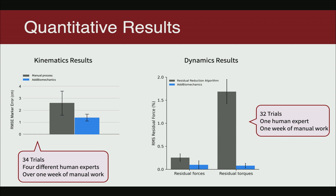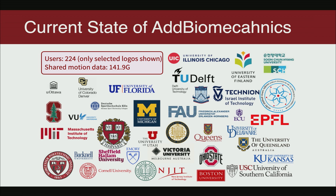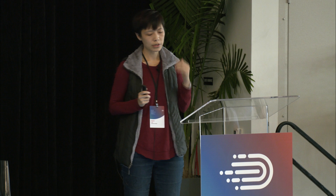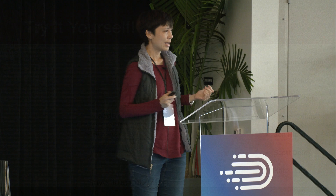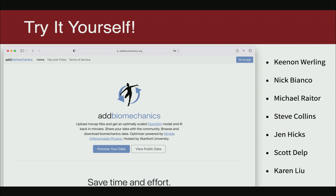We asked friends and colleagues in biomechanics to try our beta version, and in the last eight months we've seen rapid growth in user base and data being collected — with no marketing or advertisements. We expect even more explosive growth once we formally launch AddBiomechanics to the public. If you're intrigued, you can go to the website and try it — it's really easy to use. We believe that if we have a place where data can be shared, aggregated, and standardized, we can empower many more researchers to use modern machine learning techniques to build more powerful digital twins that make real impact on people.